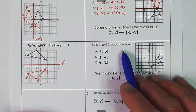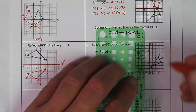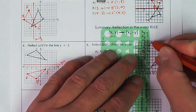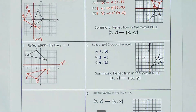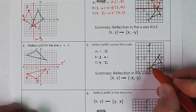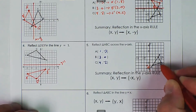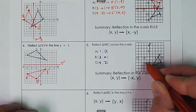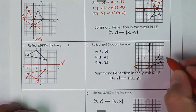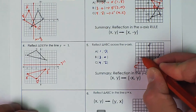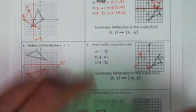We want to reflect over the y-axis, which is right here. All we have to do is count: A is over one — over one — that's A prime. C is one, two, three, four — one, two, three, four — that's C prime. B is over three — over three — and that's B prime. Then we connect our dots.